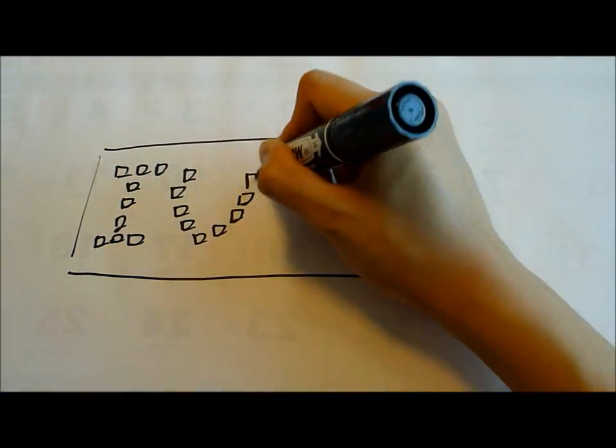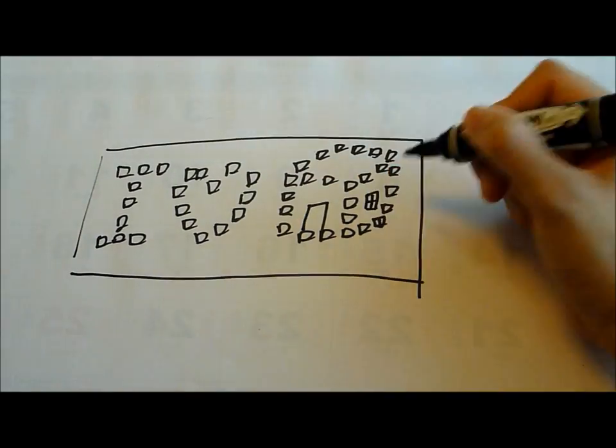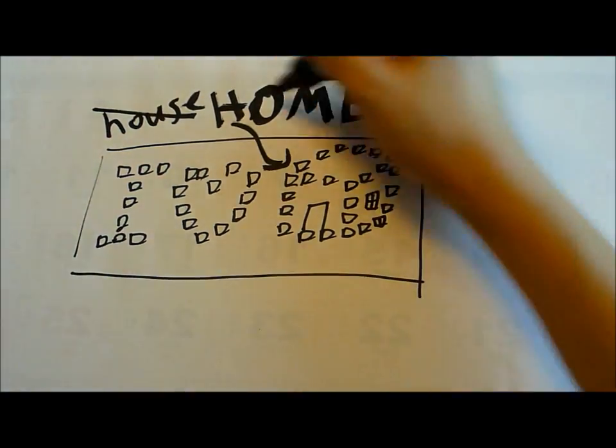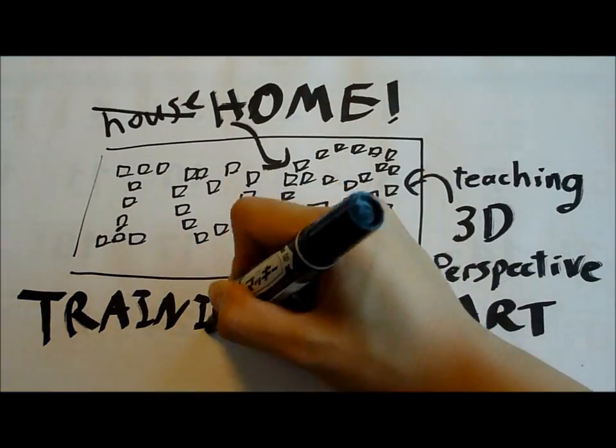Introducing the training board. The training board is filled with holes which the cakes can fit into. It says I love home, not I love house, and the home is in 3D, teaching your child 3D perspective art.